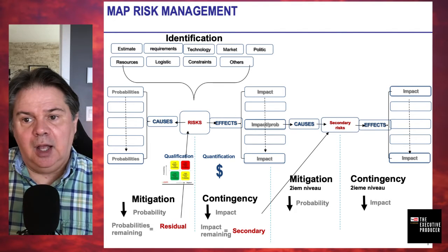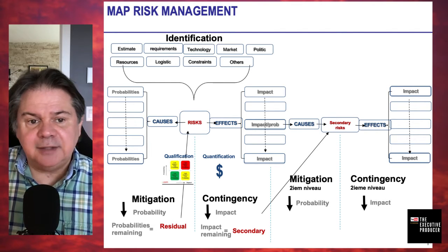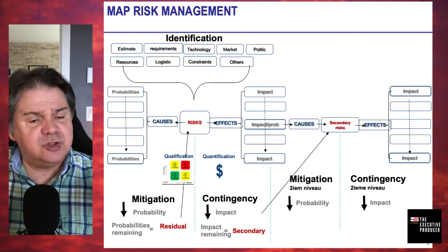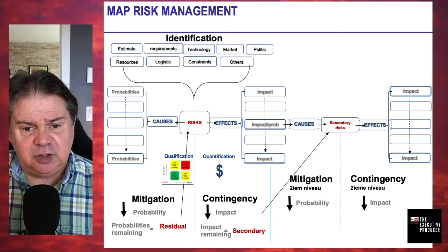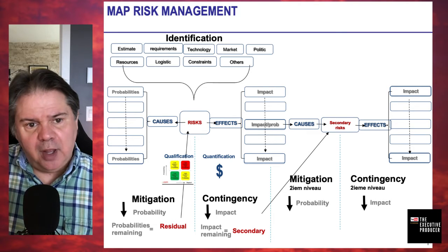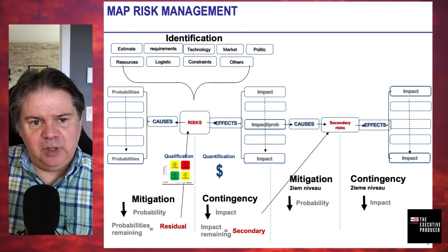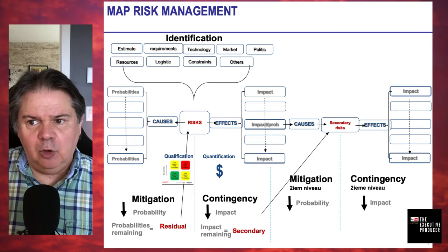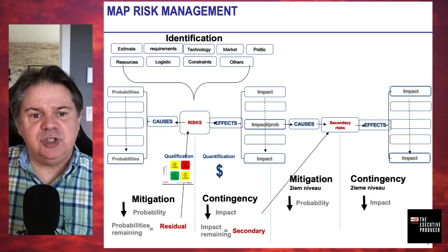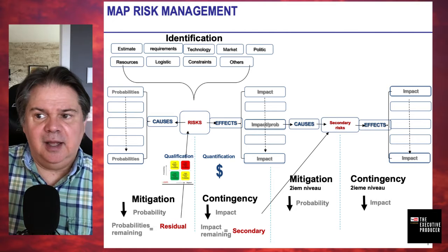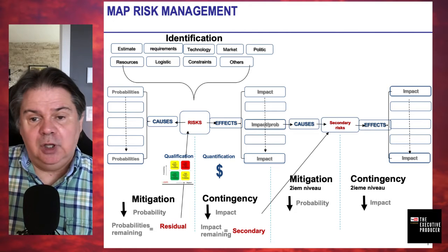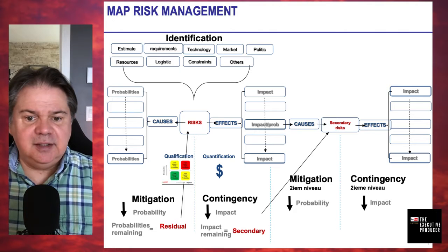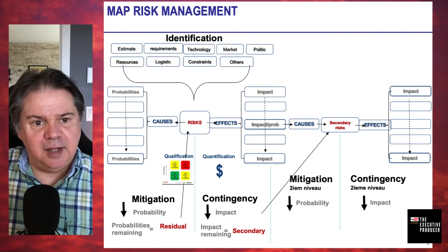Of course there's also technology, market, politics, resources, logistics, constraints, and others — any area that might come back to bite you. One good way to figure out if you have all the categories is to understand from all the stakeholders whether they can identify an area you may have missed. The idea is for you not to be surprised about a scenario that is well-known and that you didn't consider.